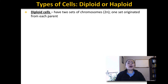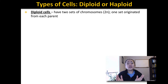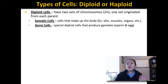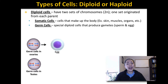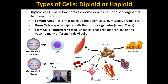So which cells in your body are diploid? All the cells in your body except your sperm or eggs are diploid. Diploid cells in your body include somatic cells, which are cells that make up your body like your skin cells, muscle cells, and cells that make up other tissues and organs. Germ cells are special diploid cells found in your ovaries or testes that become eggs and sperm. And stem cells are unspecialized diploid cells found in your body that can divide and become many different kinds of cells.